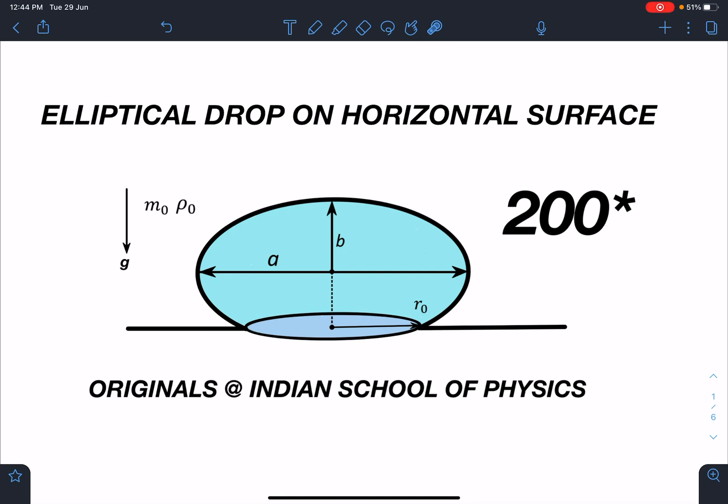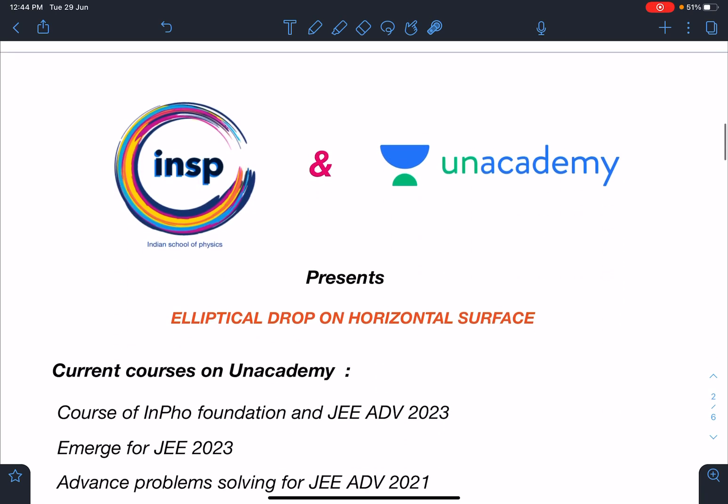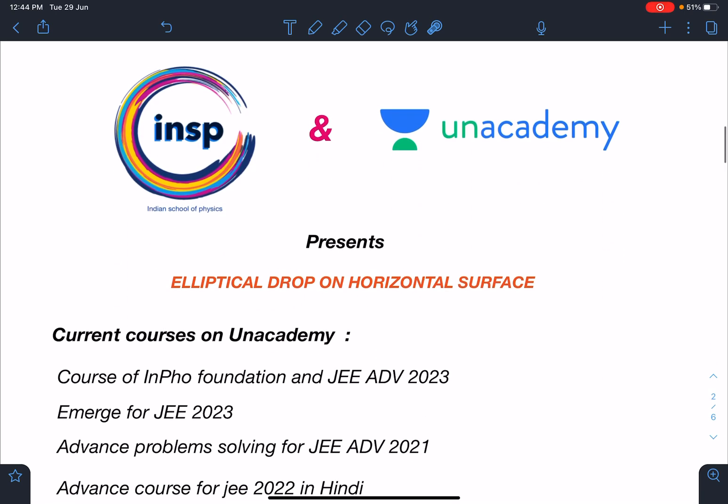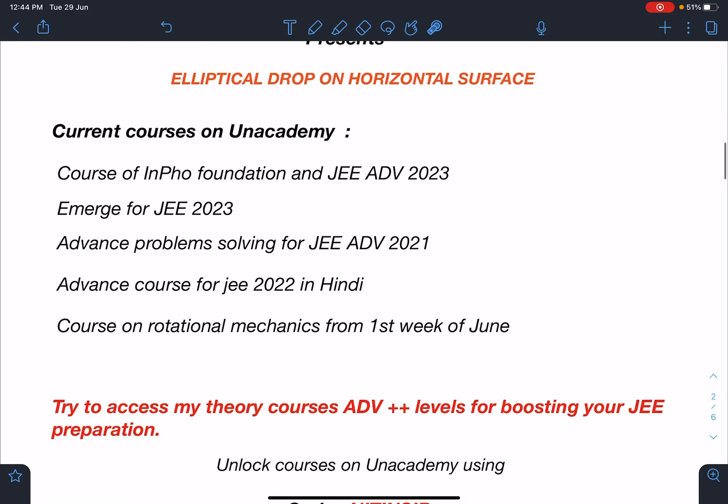This video is brought to you by Indian School of Physics and Unacademy together. My current courses on Unacademy are for IIT JEE foundation and JEE Advanced 2023. Currently in this batch, circular motion and work power energy will be starting, and there is another batch for JEE 2023.